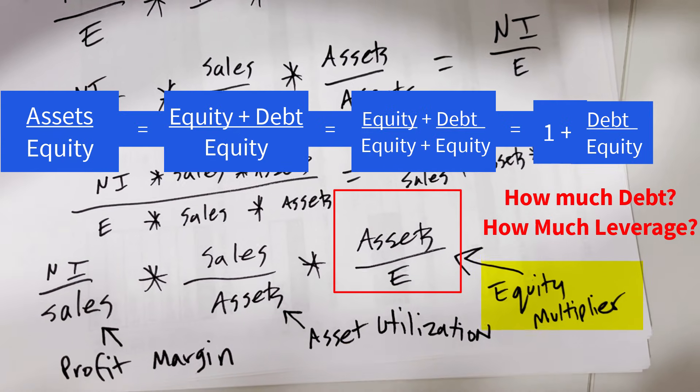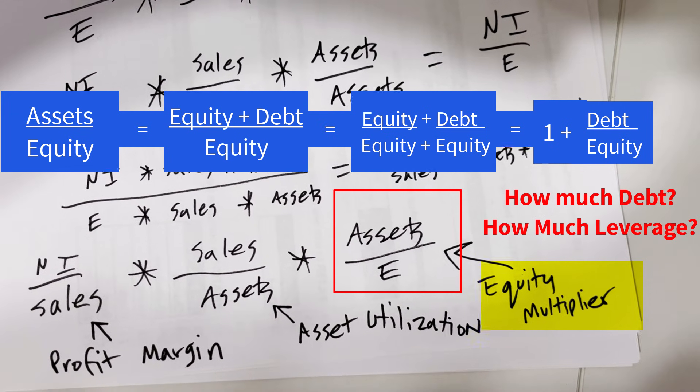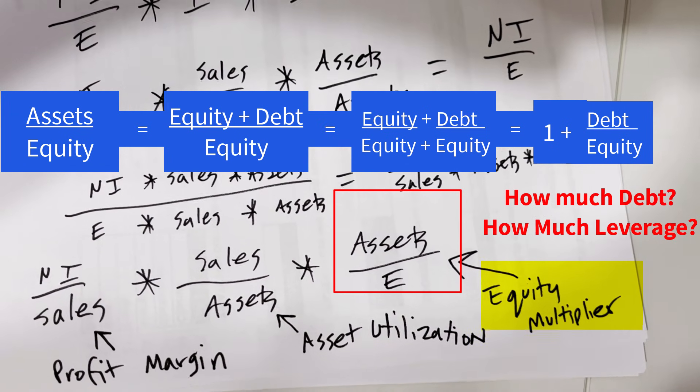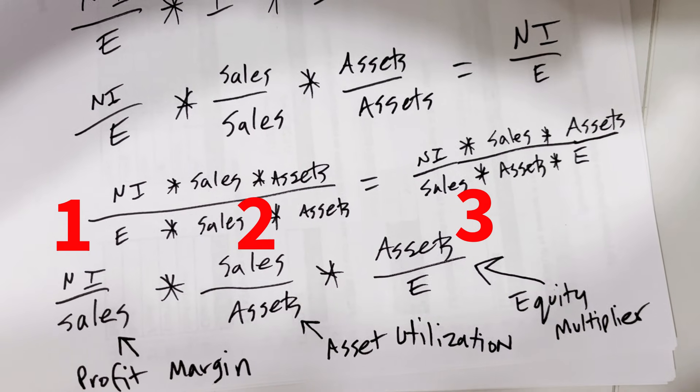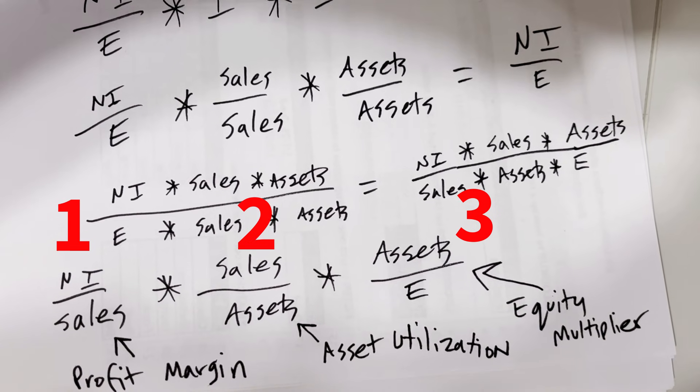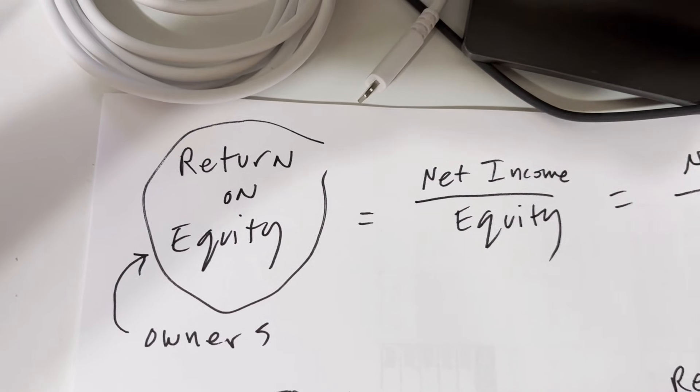And then the equity multiplier: for every dollar of equity, how many assets do we have working for us? Those three components help you really understand return on equity.